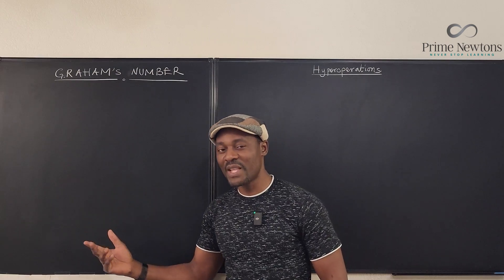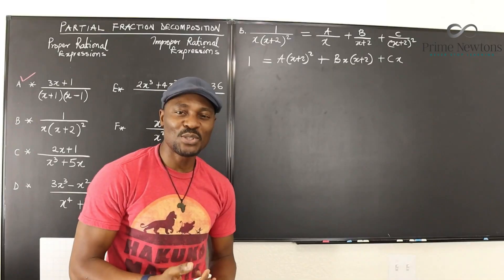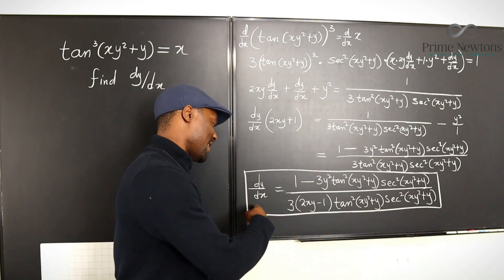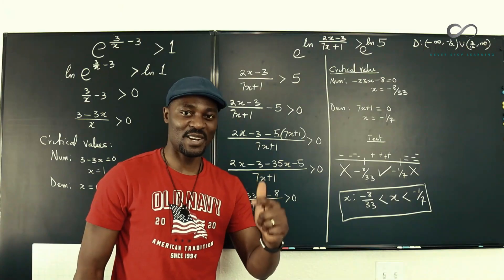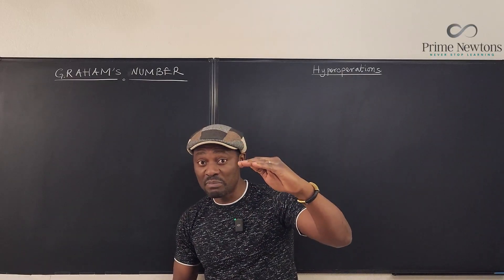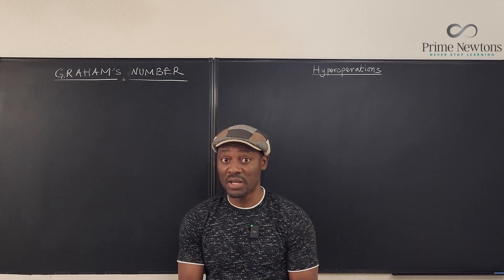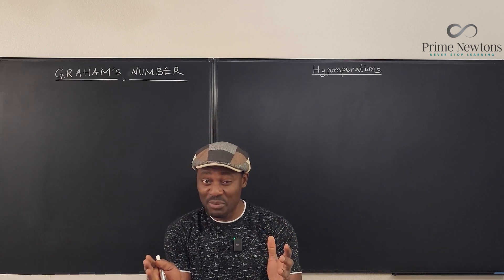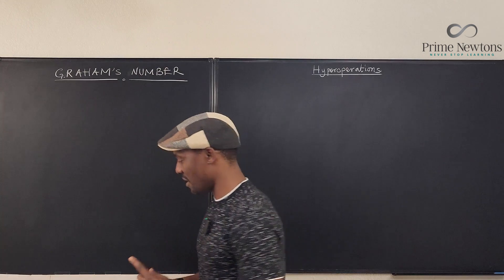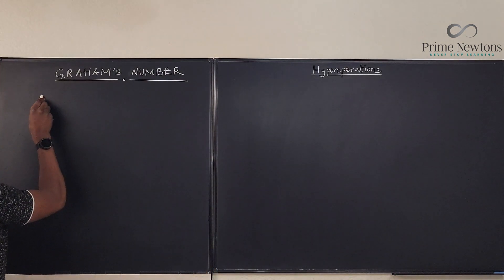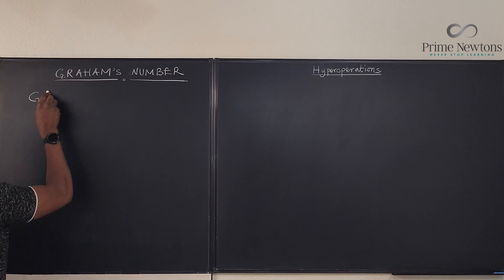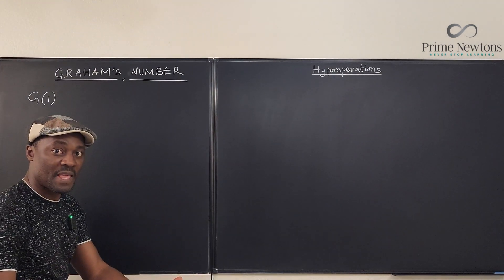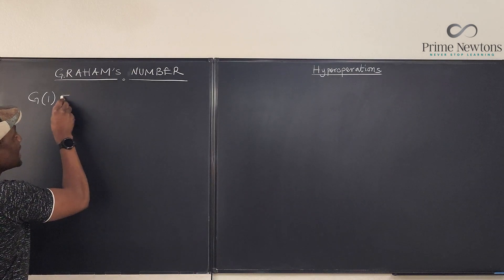Graham's Number is gradually built from the smallest to the biggest. So what is the smallest number involved? It is three. We're going to call this G1 — the very first step in computing Graham's Number. G1 is three with four arrows between two threes.